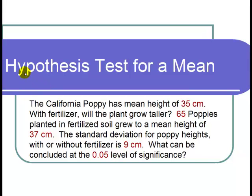This is a video on a hypothesis test for a mean. The question states, the California poppy has mean height of 35 centimeters. With fertilizer, will the plant grow taller? 65 poppies planted in fertilized soil grew to a mean height of 37 centimeters. The standard deviation for poppy heights with or without fertilizer is 9 centimeters. What can be concluded at the 0.05 level of significance?